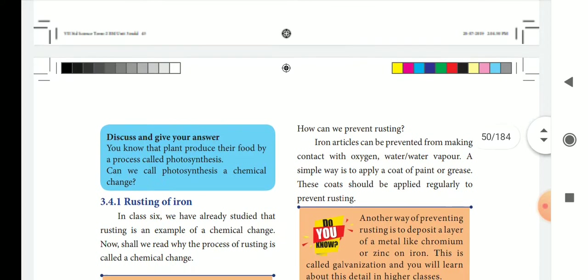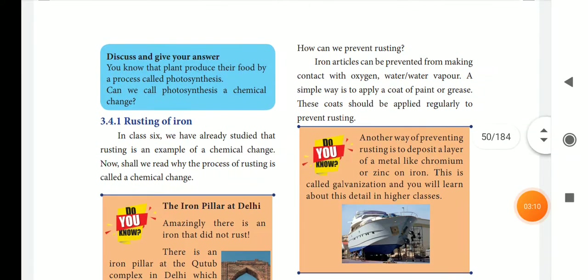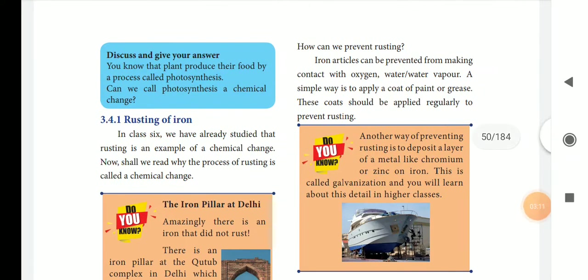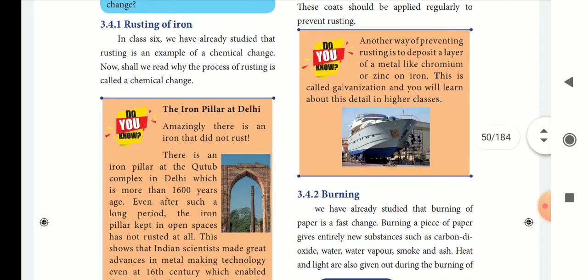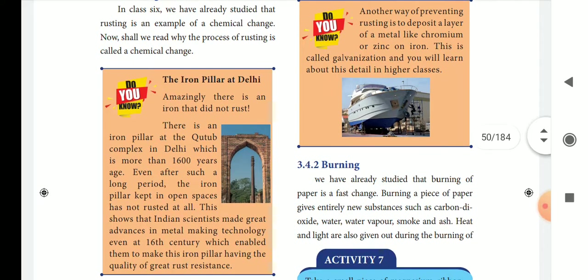Next is the rusting of iron. Here is a 'do you know' fact: there is an iron pillar. This is from a complex that is 1,600 years old. So, over a long period, the iron pillar is still there.